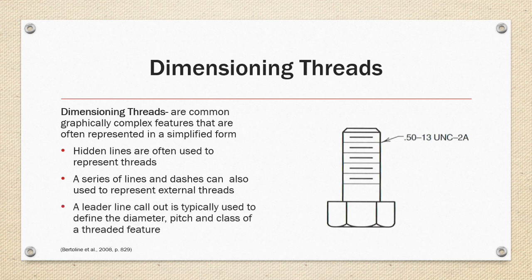A leader line callout is typically used to define the diameter pitch and class of a threaded feature. The thread in this example is a half inch diameter thread with 13 threads per inch and is to be made to the Universal National Core standard and to be made with a class 2 tolerance standard for the thread and the external thread is denoted by the letter A.